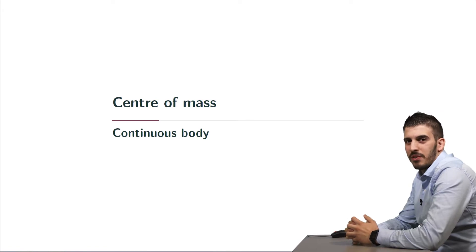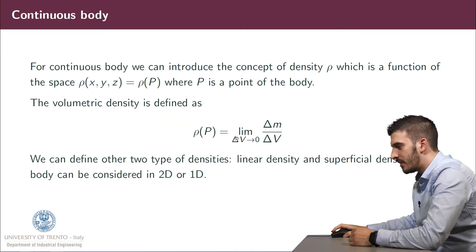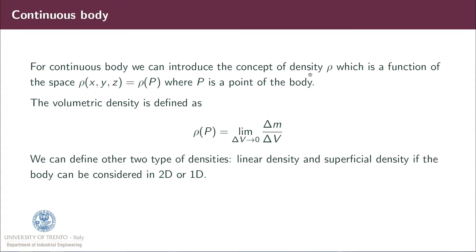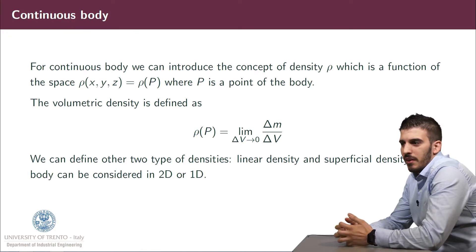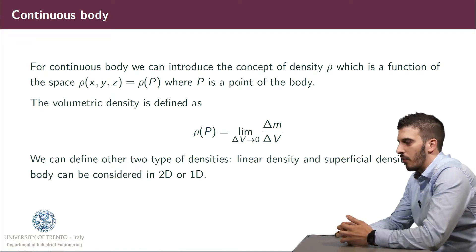Let's extend the formulation of the center of mass for a continuous body. For a continuous body, we must introduce the concept of density, rho, which is a function of space — rho of x, y, and z. We write synthetically that rho is a function of P, where P is a point of the body. We define the volumetric density as rho of P equal to the limit of delta V going to zero of delta M over delta V. We can also define linear density and superficial density if we consider a 2D or 1D body where one or two dimensions can be neglected.